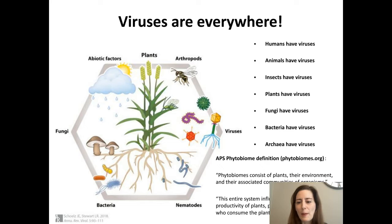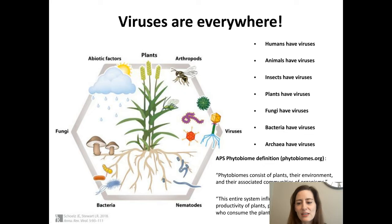The American Phytopathological Society has encapsulated this concept with their definition of the phytobiome, which they say consists of plants, their environment, and associated communities of organisms. I'm showing you an image here that shows plants and all the associated biotic and abiotic factors that impinge upon their health. Viruses impinge upon all of these different biotic factors in the system and are important to consider in all of the ways that they impact us.